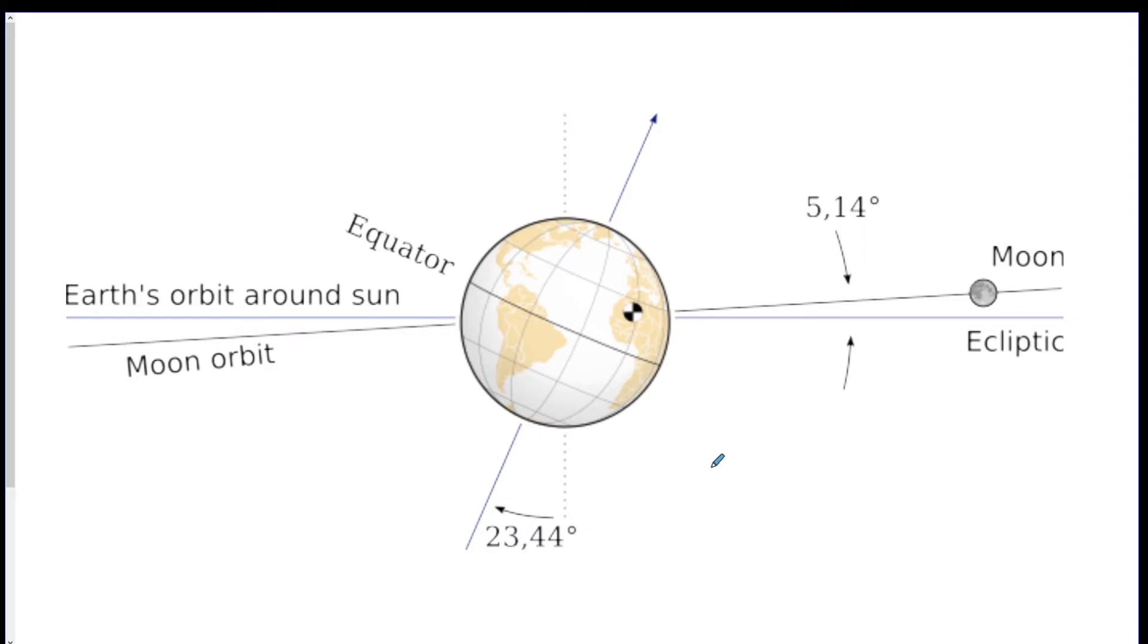Eclipses don't happen every month because the Moon, as you can see, its orbit is a little bit tilted, about 5 degrees compared to the plane of the Earth's orbit. So since the Moon's orbit is tilted, we do not get eclipses every month.